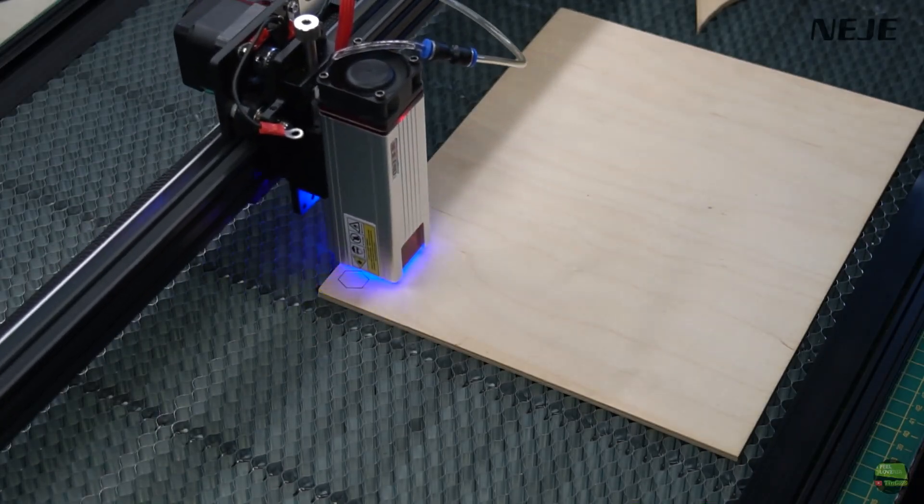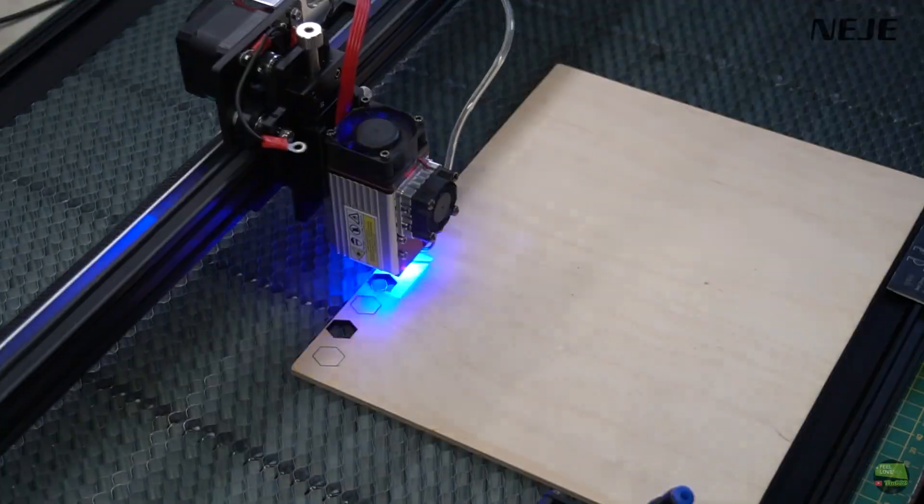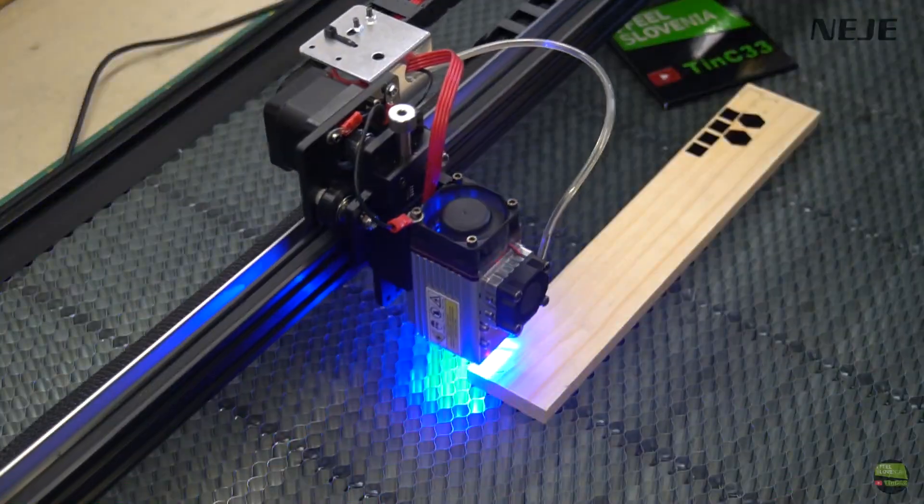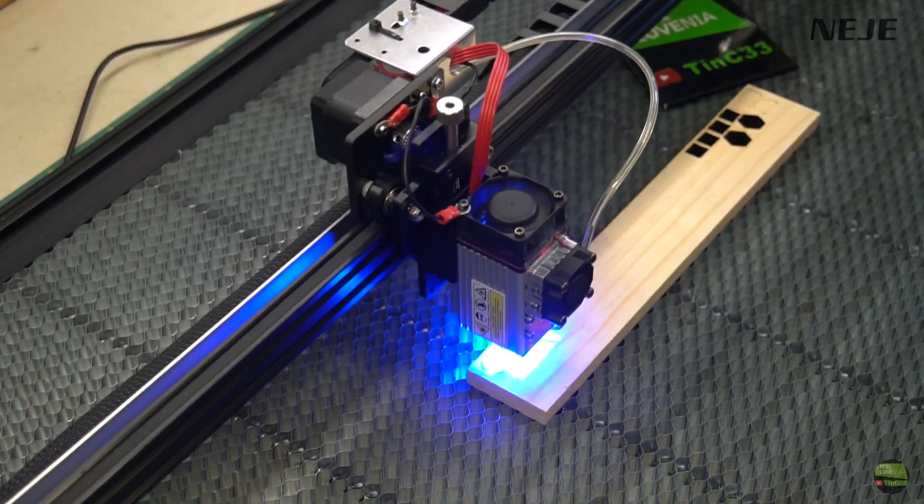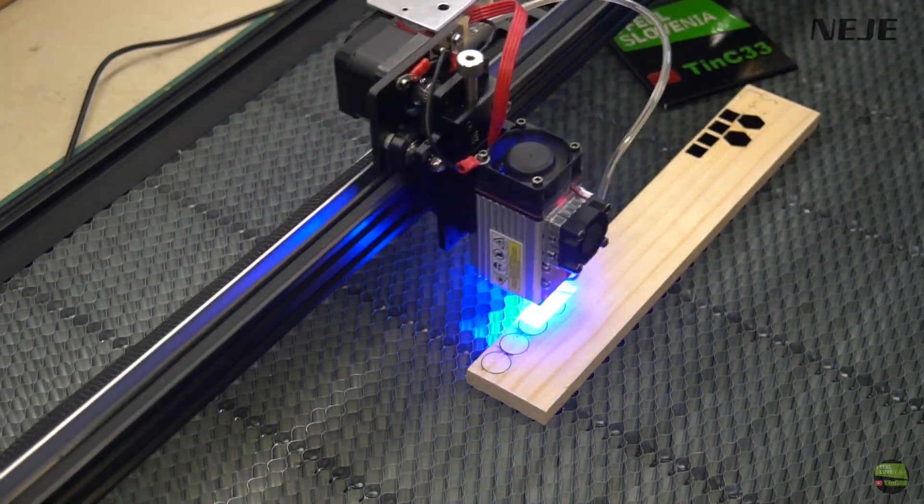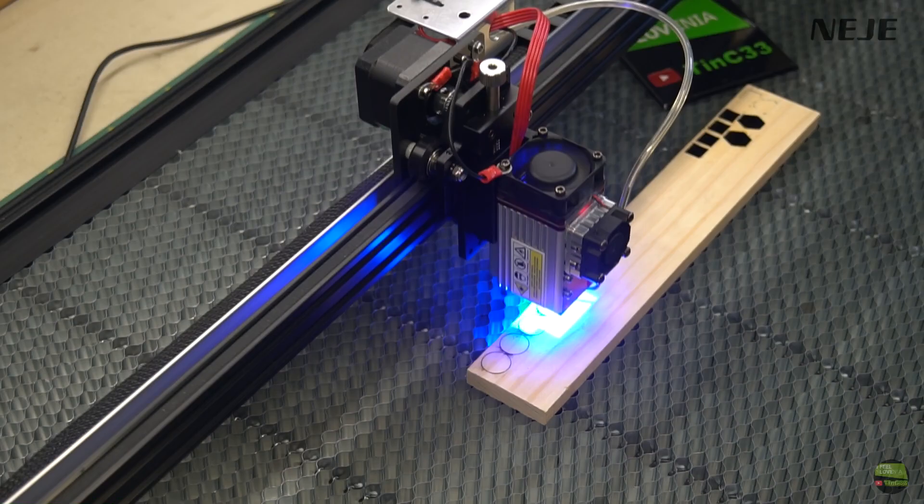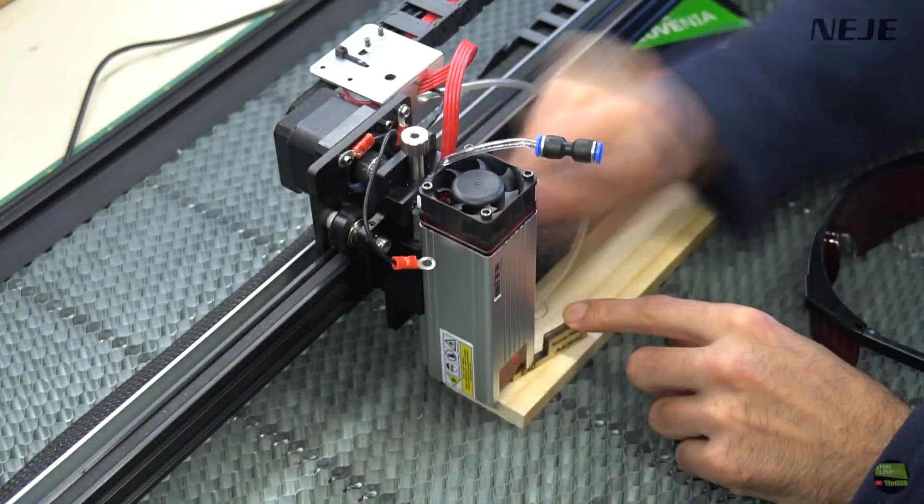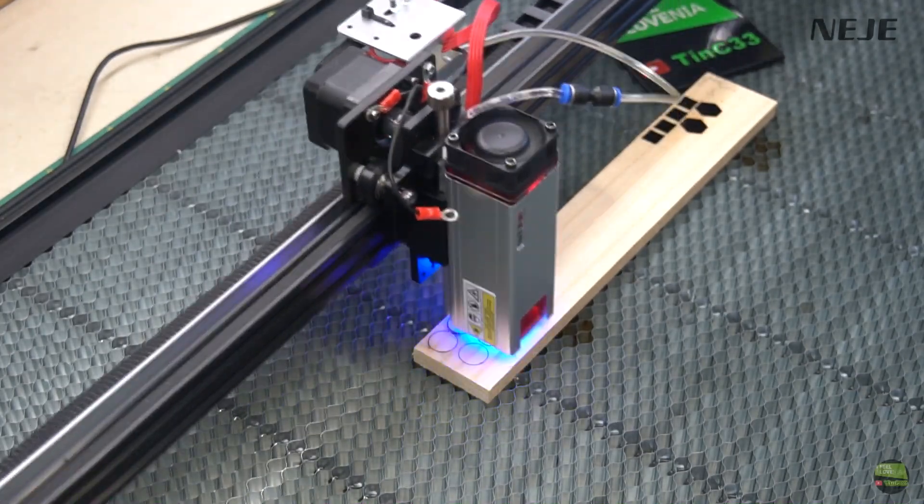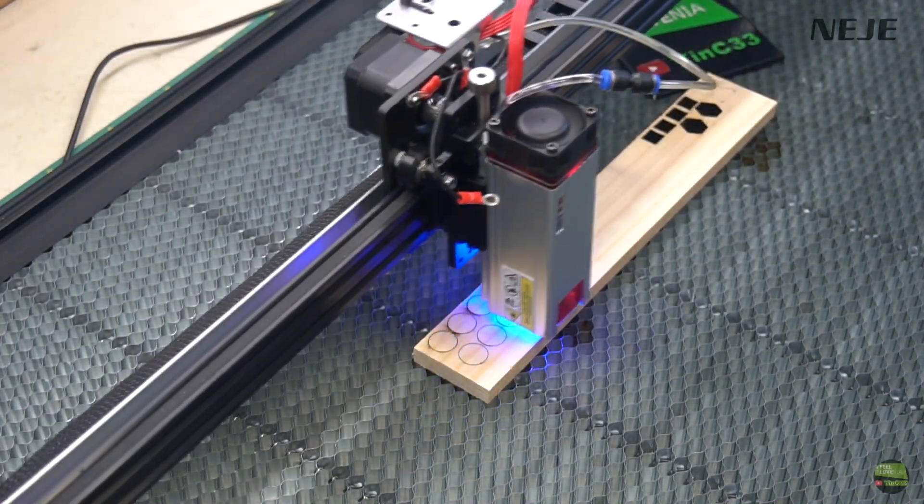Both models cut 5mm plywood in 3 passes with 5mm per second speed and 100% laser power. So I tried to cut about 12mm thick spruce wood. Firstly with A4640, started with 2 passes and then continued with 3, 4, 5 passes until it cut through. And then replaced the model to E40 and cut with same settings, 5mm per second and 100% laser power.